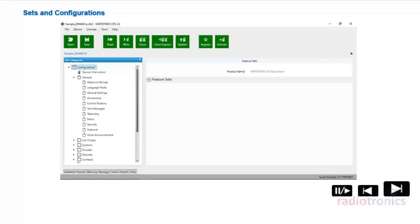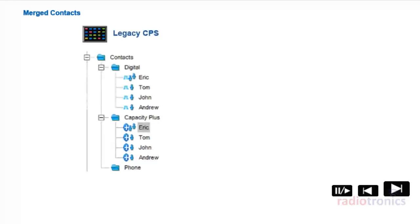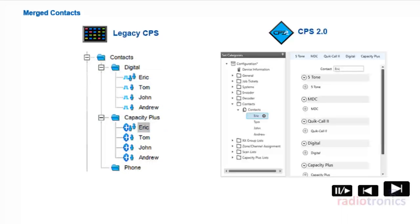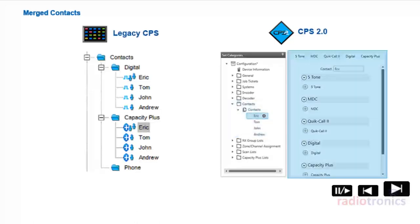A significant quality-of-life improvement has been introduced to contacts management in CPS 2.0. In legacy CPS, the user would first need to select an individual call type and assign a contact, and the process would need to be repeated with every single call type. With CPS 2.0, the user selects a contact from the list and associates any required call types to it, allowing for better structure and organization to manage parameter association.